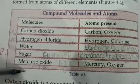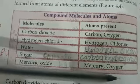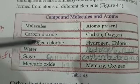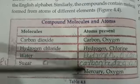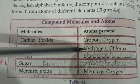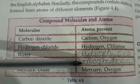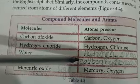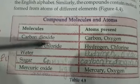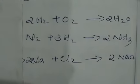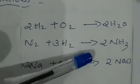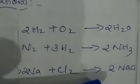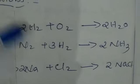Mercury oxide contains only mercury and oxygen, while sugar contains carbon, hydrogen and oxygen. Compounds are formed by the combination of two or more elements. We have already learned how to calculate the number of atoms in each molecule. Now we can see some chemical equations: 2H₂ + O₂ gives 2H₂O; N₂ + 3H₂ gives 2NH₃; 2Na + Cl₂ gives 2NaCl.